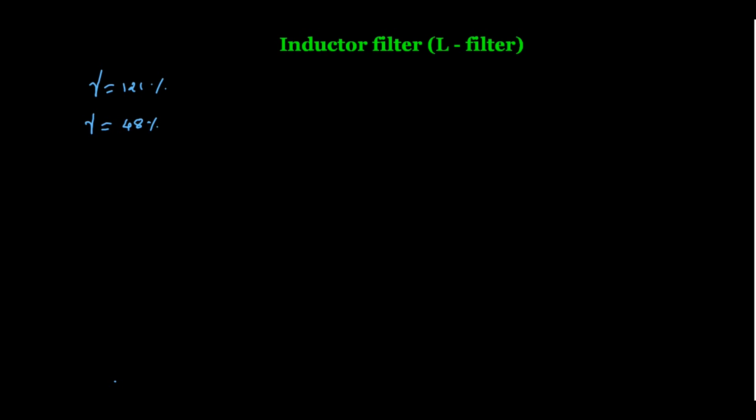For a pure DC power supply, the ripple factor is 0% — that is the ideal case. But if we introduce some component like an inductor or a capacitor into the rectifier circuit, then this ripple factor can be decreased from 48% to 10%, or even to 1%. With good quality filter components, it can be reduced to 0.1%. A ripple factor of 1% or 0.1% is considered a good quality DC power supply. Let us see how inductors and capacitors are useful for making a filter circuit.